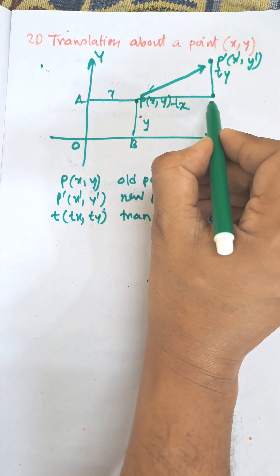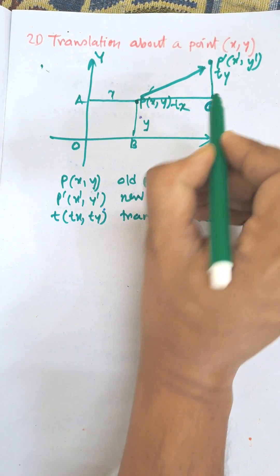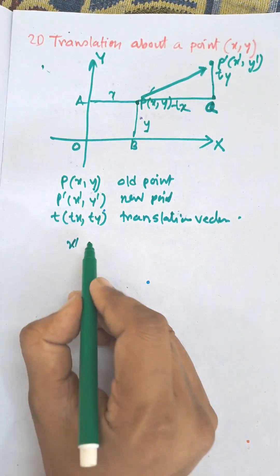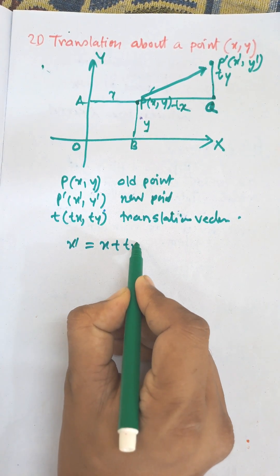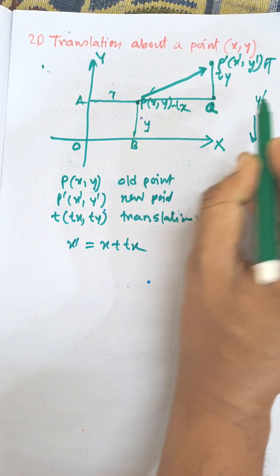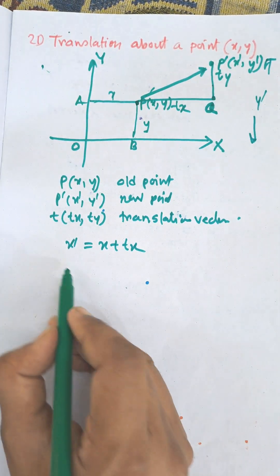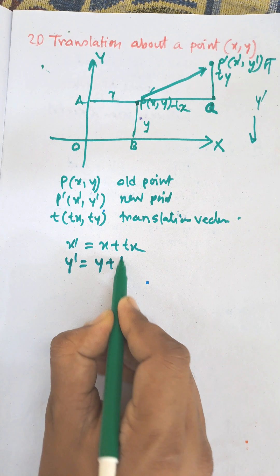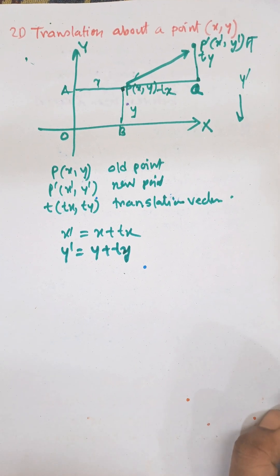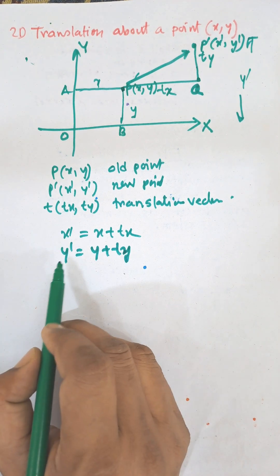Here this one is the new location. We need to find x', so x' = x + tx, and y' = y + ty. These are the equations for translation of a point.